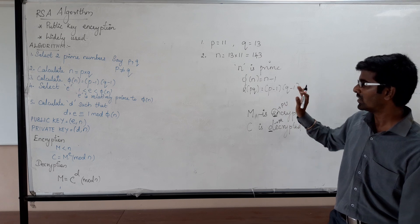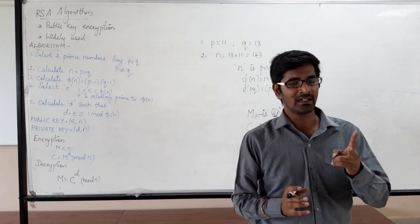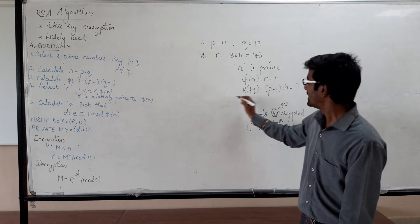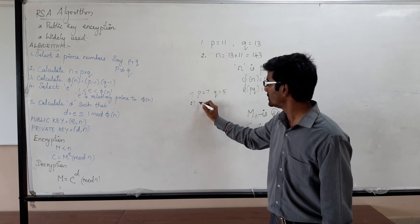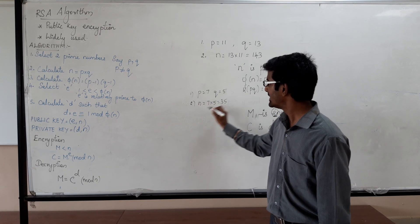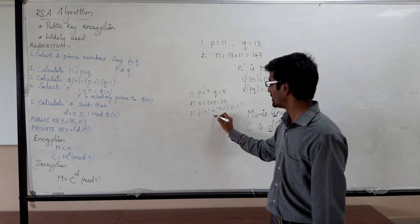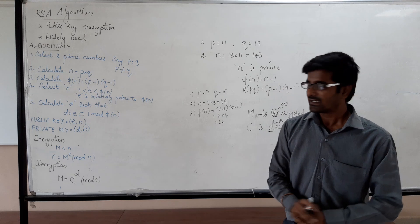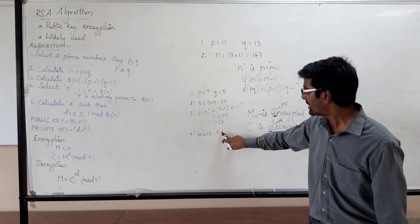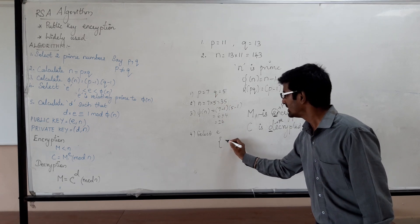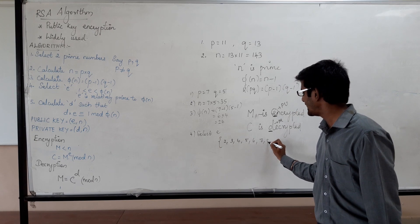For example, taking P equal to 7 and Q equal to 5: step 1, P=7, Q=5; step 2, N = 7×5 = 35; step 3, φ(N) = (7−1)×(5−1) = 6×4 = 24. Step 4 is selecting E. The number chosen for E must be greater than 1 and less than φ(N), so greater than 1 and less than 24 — possible values are 2, 3, 4, 5, 6, 7, 8 up to 23.